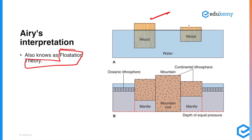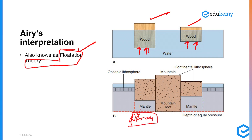Next is Sir George Airy's interpretation of isostasy, also called the flotation theory. In the figure, two wooden blocks float in a denser medium — water — because the denser water provides a buoyancy force that stabilizes the wood. Airy says landforms are similarly stabilized in accordance with the flotation principle: just as blocks of wood float on water, landforms also float because the denser medium below provides buoyancy that stabilizes them.